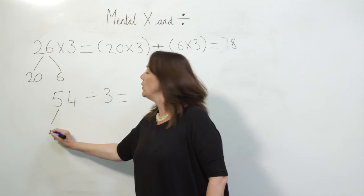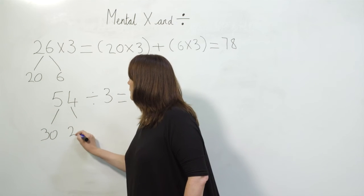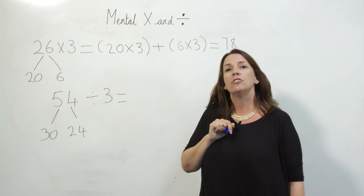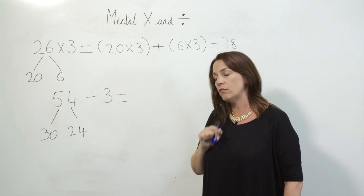I'm going to split 54 into 30 and 24, and now I can divide both of those numbers easily by 3 because 30 and 24 are multiples of 3.